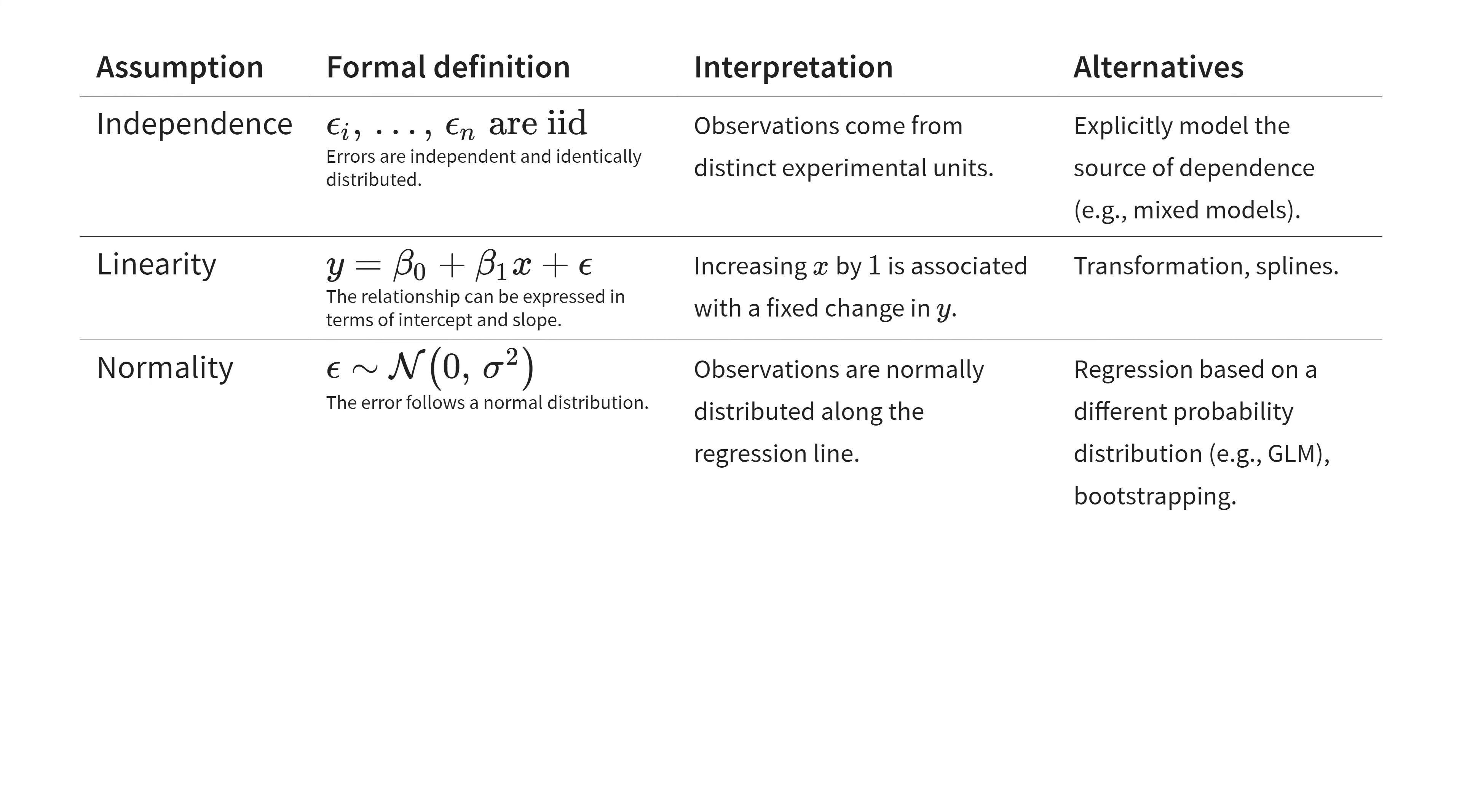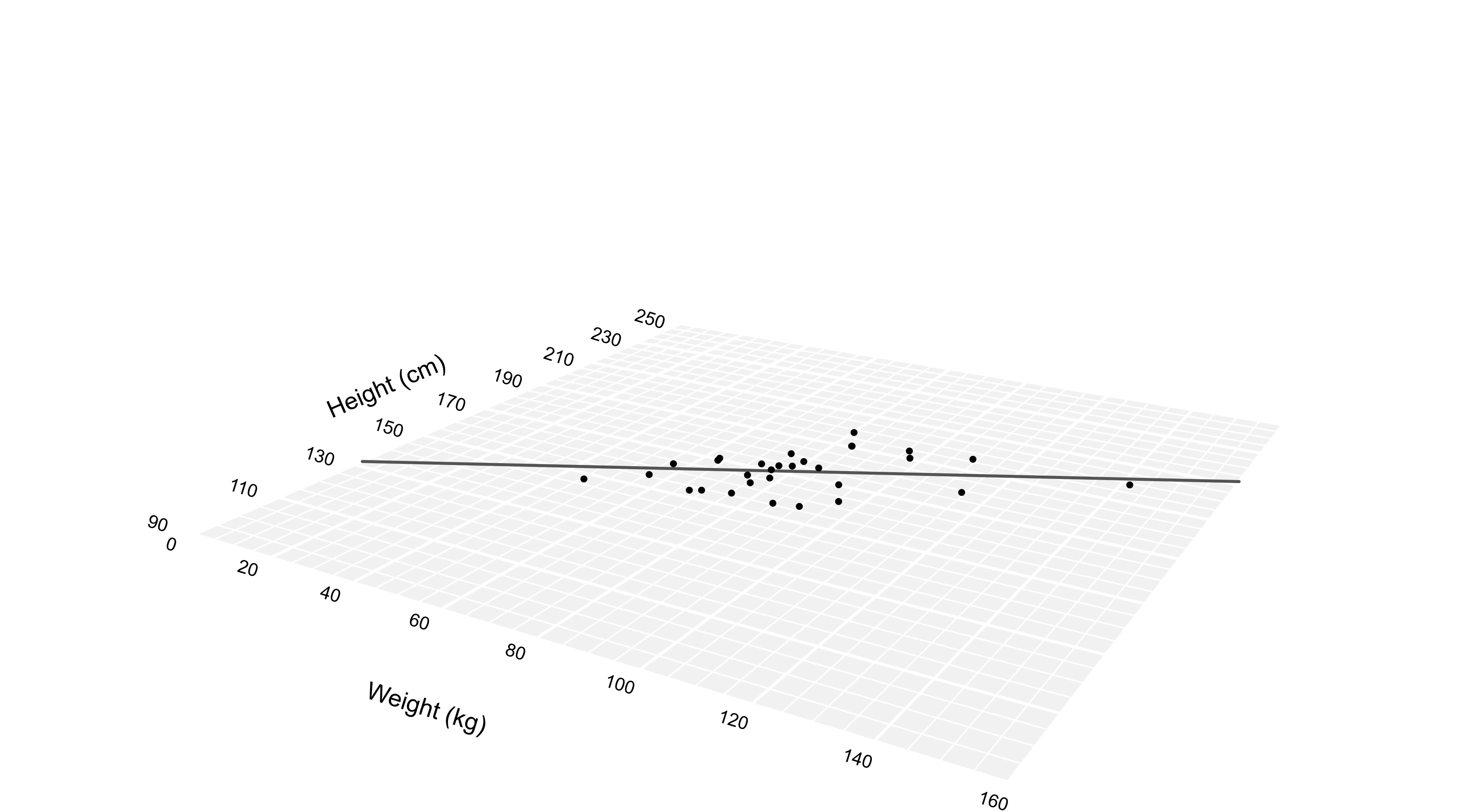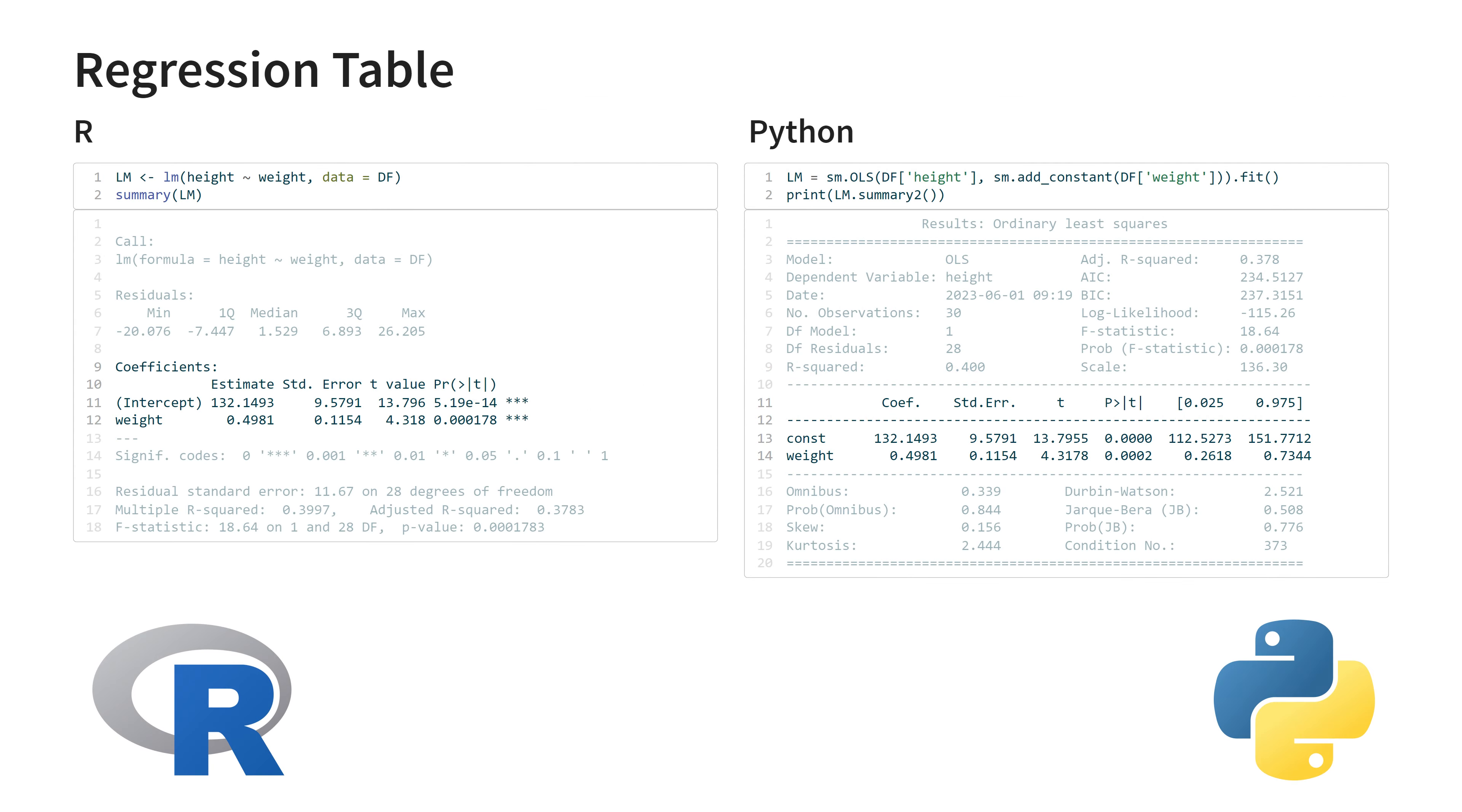The third assumption, normality, means that if we would take our regression line and flip it over, like this, then the errors we make follow a normal distribution along the regression line. This assumption matters because the whole theory behind all the output we'll see in the next video is derived from a normal distribution.